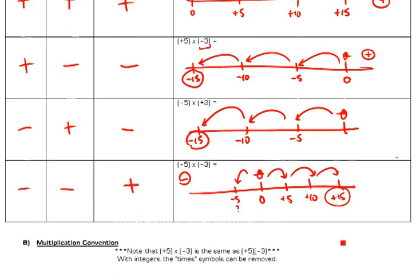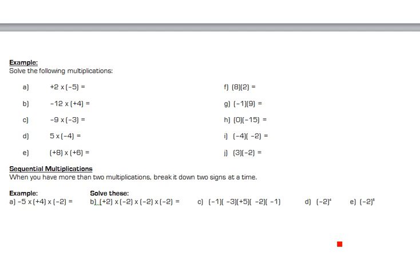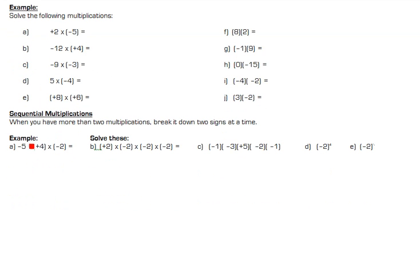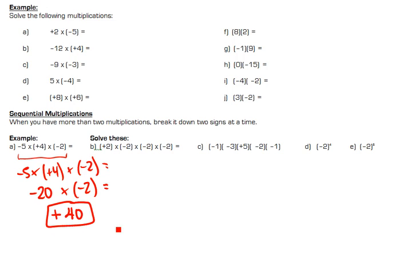If I look at some other examples where there are multiple numbers together, I just solve them one at a time. So in this case, I have negative 5 times positive 4 times negative 2. Well, I work from left to right according to BEDMAS. So I start with negative 5 times positive 4 times negative 2. The first two negative times positive makes negative 20 times negative 2. Negative times negative is positive. And 20 times 2 is 40. So I just work it out one at a time to solve the answer. Hope you understand.